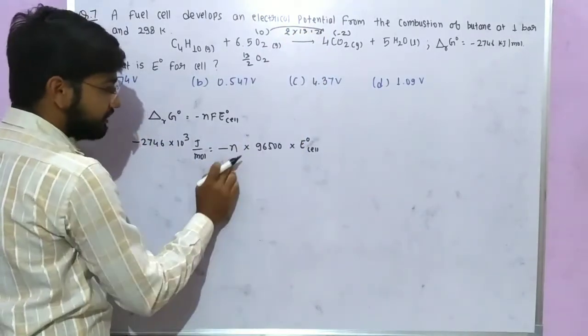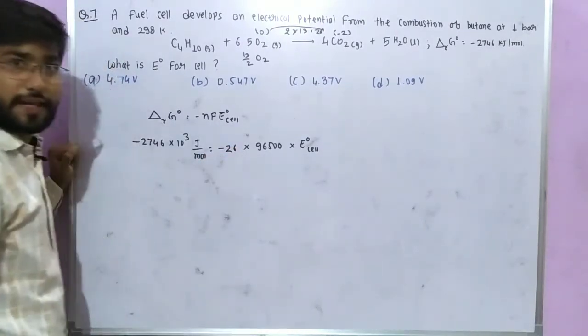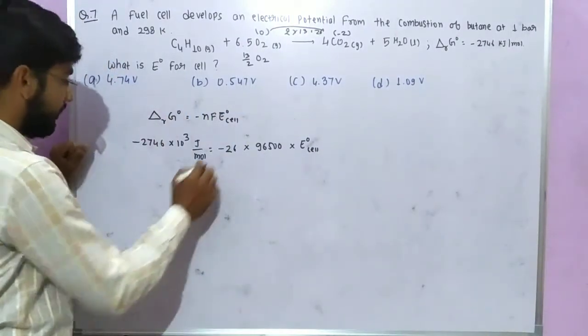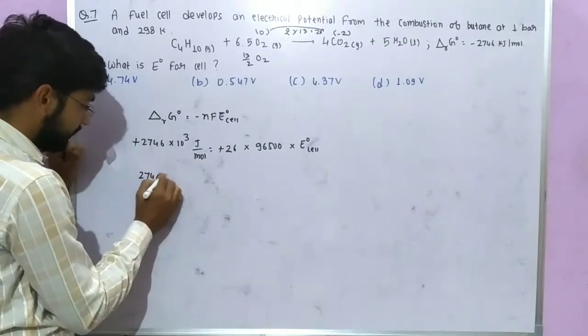So the number of electrons transferred in this reaction is now 26. So E knot will be minus, plus actually, so it will be 2746 into 10 to the power 3 upon 26 into 9650.